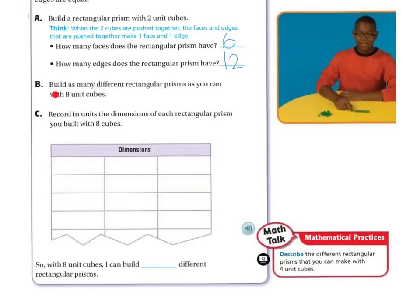The next step says: build as many different rectangular prisms as you can with eight unit cubes. Record in units the dimensions of each rectangular prism that you built. Here are some things you probably could have done: you can have an eight by one by one, a four by two by one, or a two by two by two, and so on and so forth.